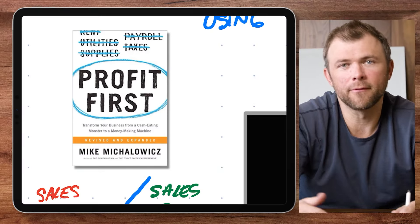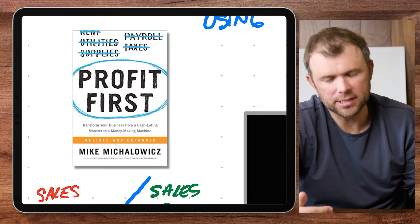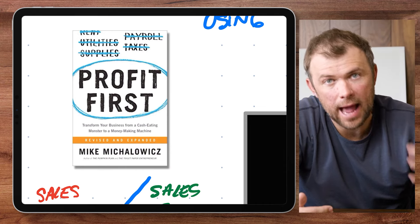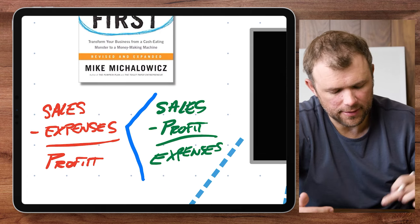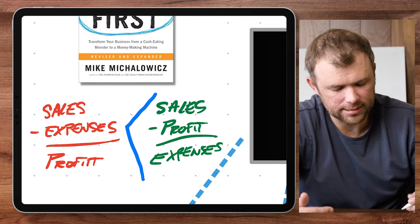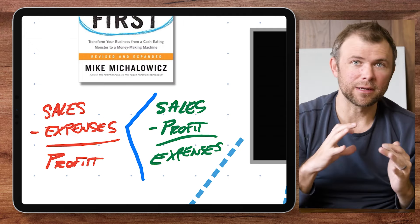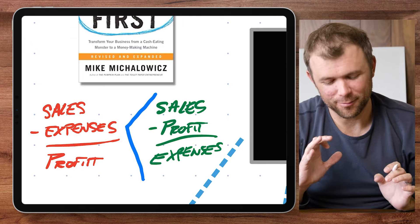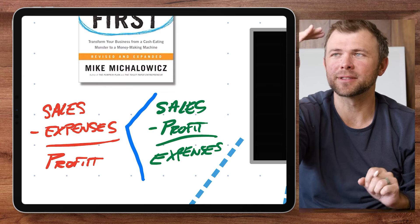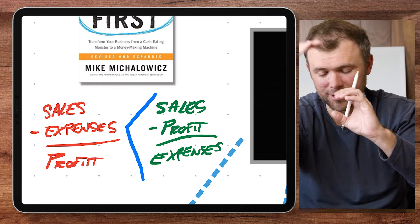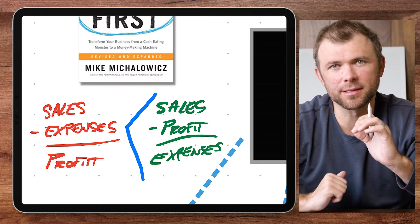I want to break that down, and really all of this comes from the book Profit First. What I love about this book is that a lot of business owners have it backwards — they think the formula for profit is sales minus expenses equals profit. Well, by following Profit First, you take sales minus your profit first, and then you're left with expenses.